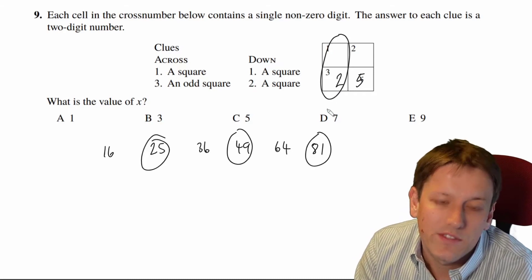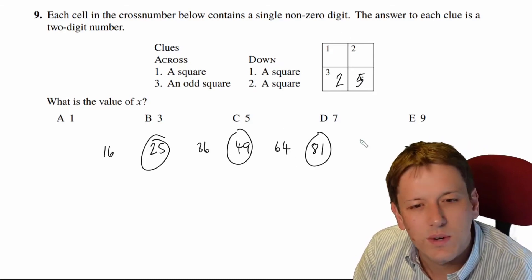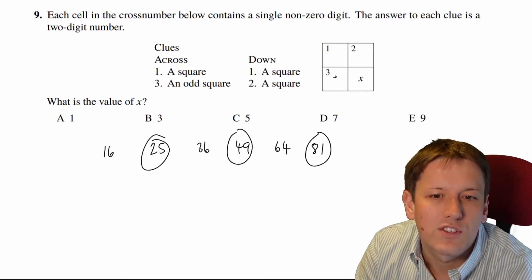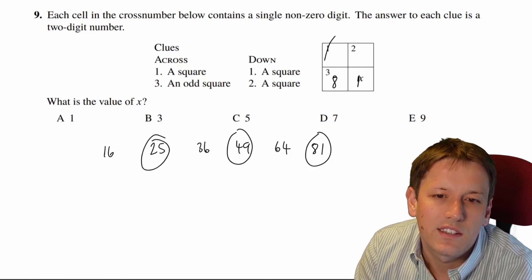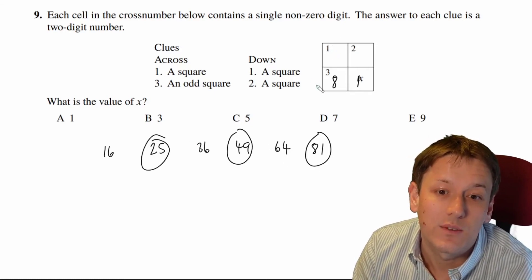That would mean that one down would have to be a square number as well. We'd have to end in a 2, but none of these square numbers end in a 2, so this can't be 25. Similarly, if I tried to put 81 in here, I'd need a square number here that ended in an 8, but none of these numbers ended in 8, so it can't be 81.